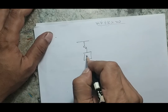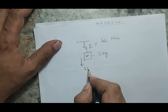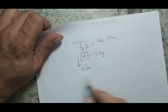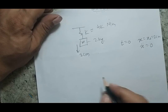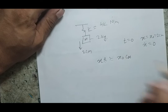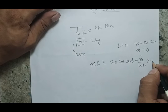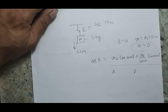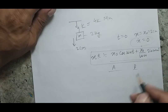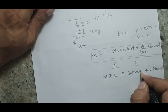Consider a worked example: a single degree of freedom system where k = 4 kN/m and m = 2 kg, with an initial displacement of 2 cm and no initial velocity. At t = 0, x = x₀ = 2 cm and ẋ₀ = 0. The expression for x(t) is x₀ cos(ωₙt) + (ẋ₀/ωₙ) sin(ωₙt).